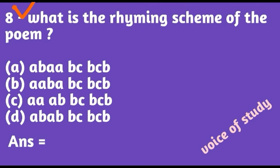Question number eight: what is the rhyming scheme of the poem? The correct option is A. The rhyming scheme is ABAABCBCB. The first line's last word rhymes with certain subsequent lines, as was explained in the first poem video.